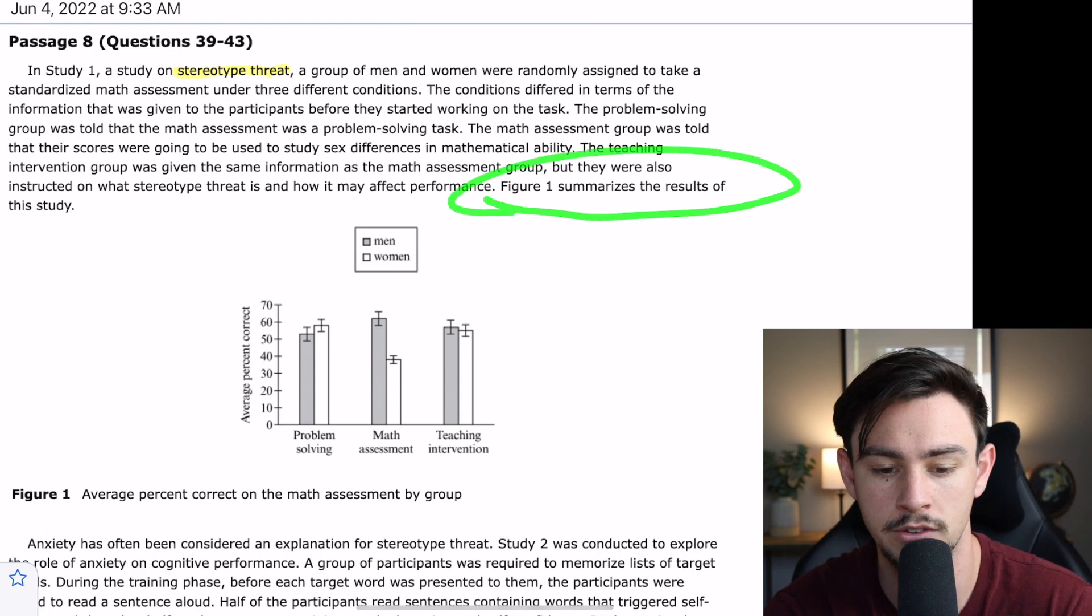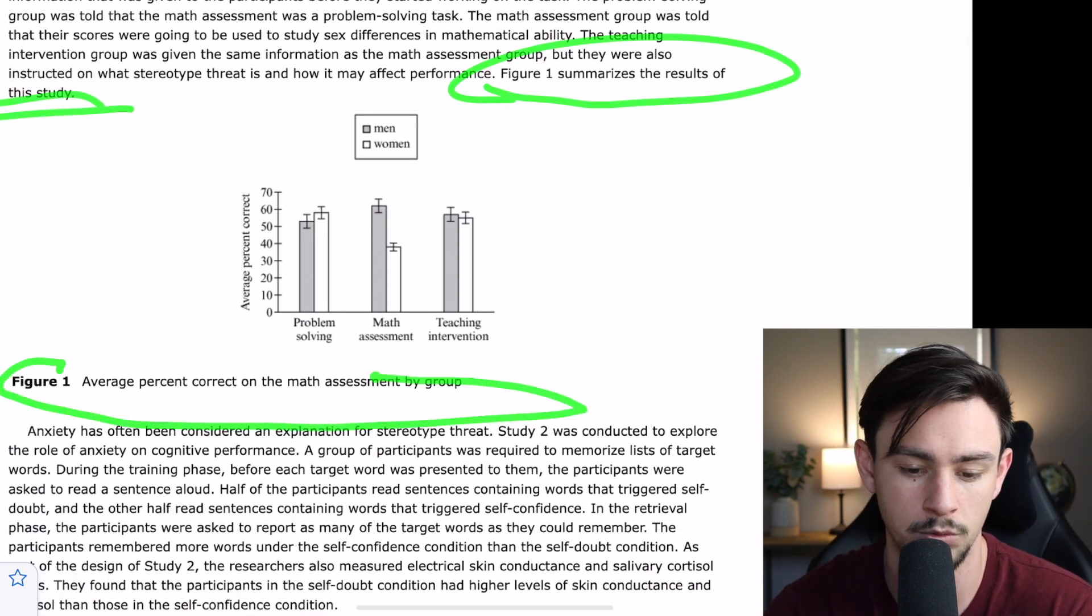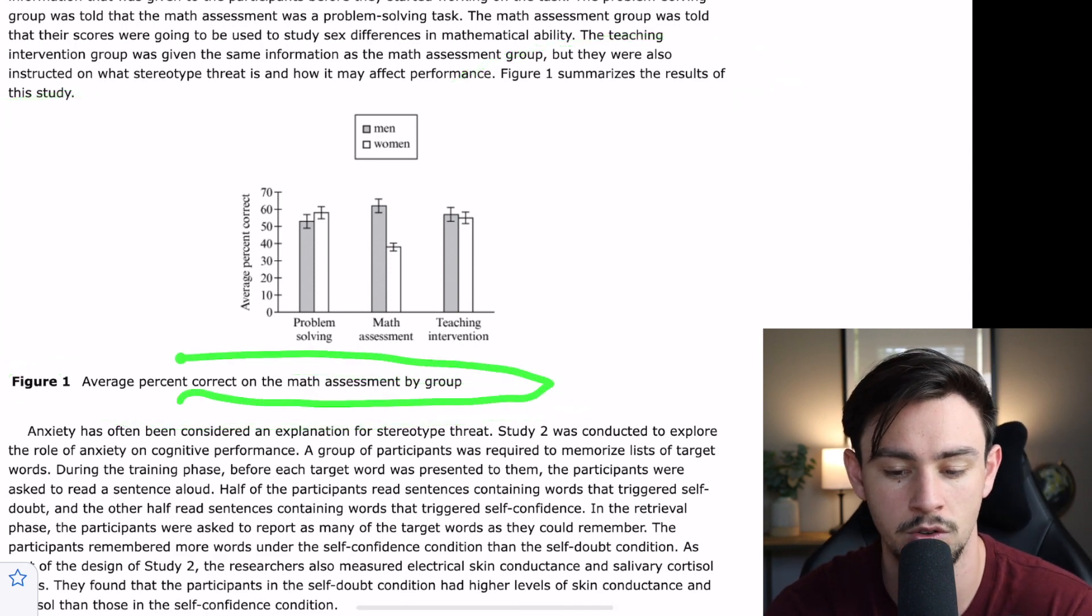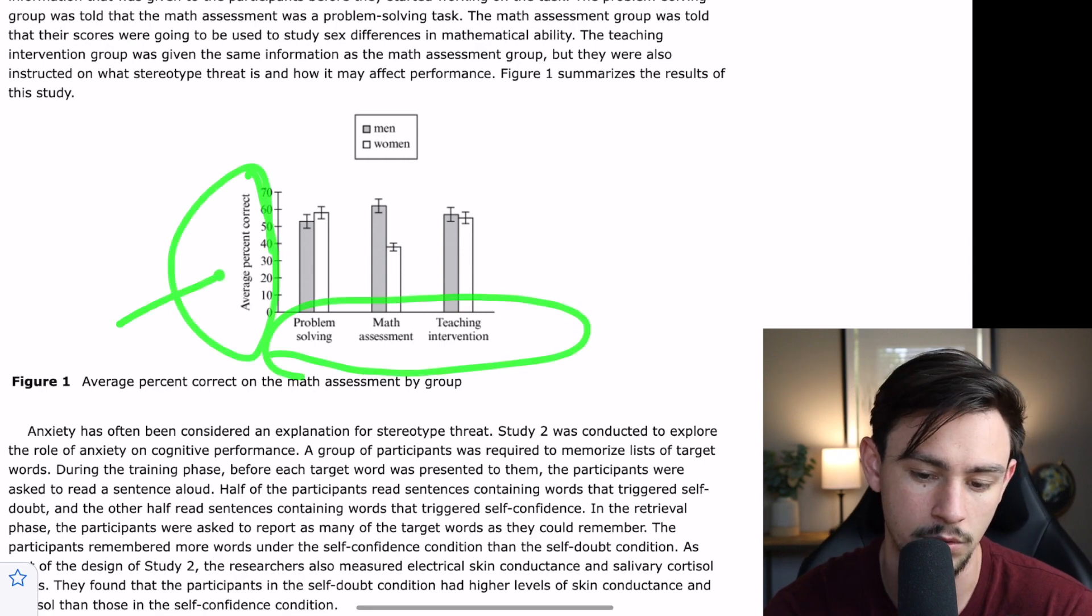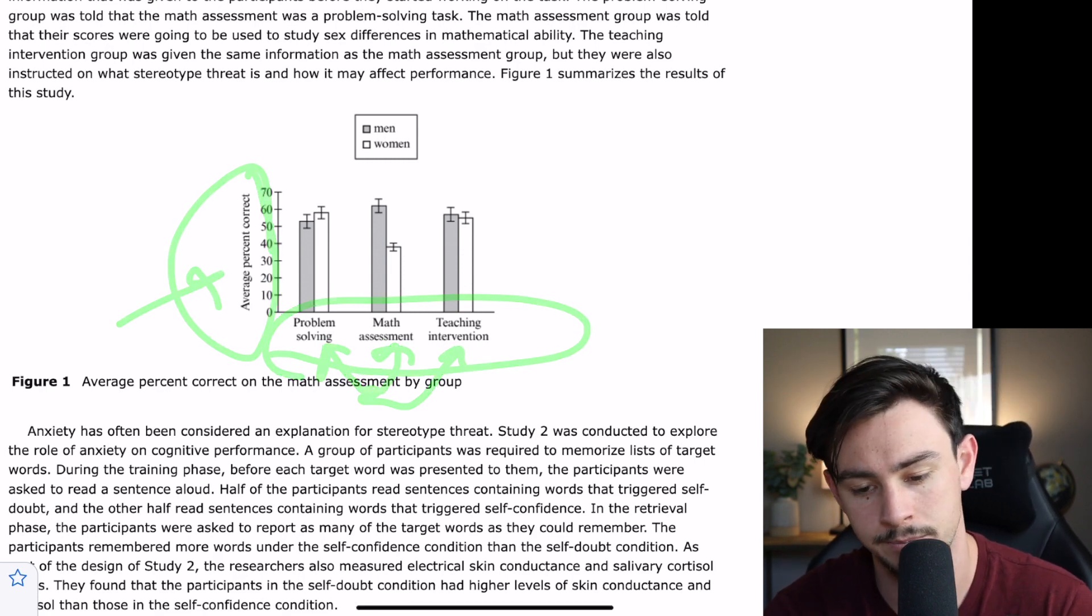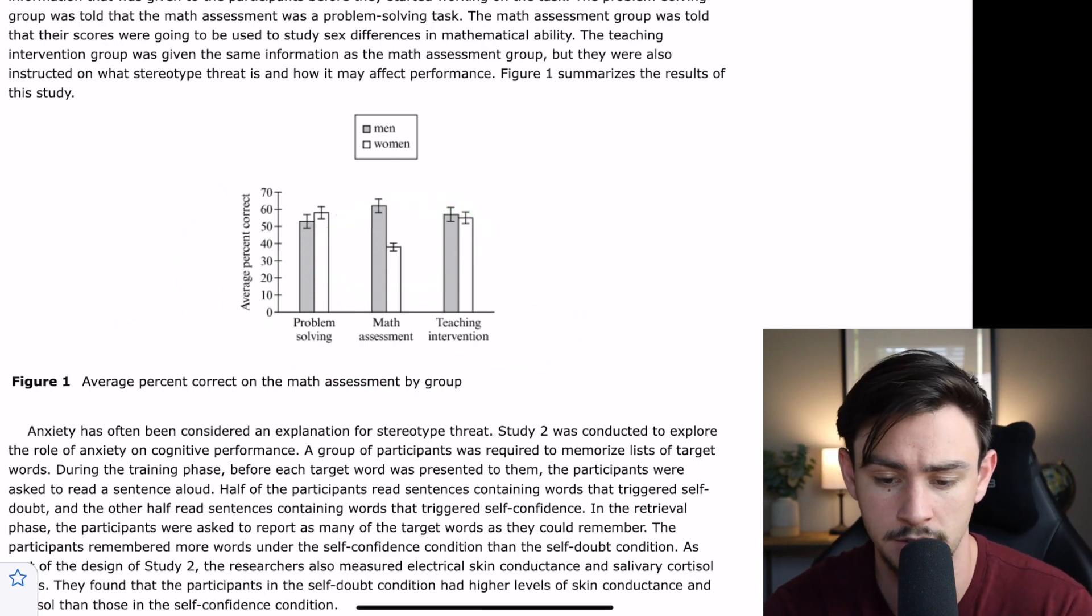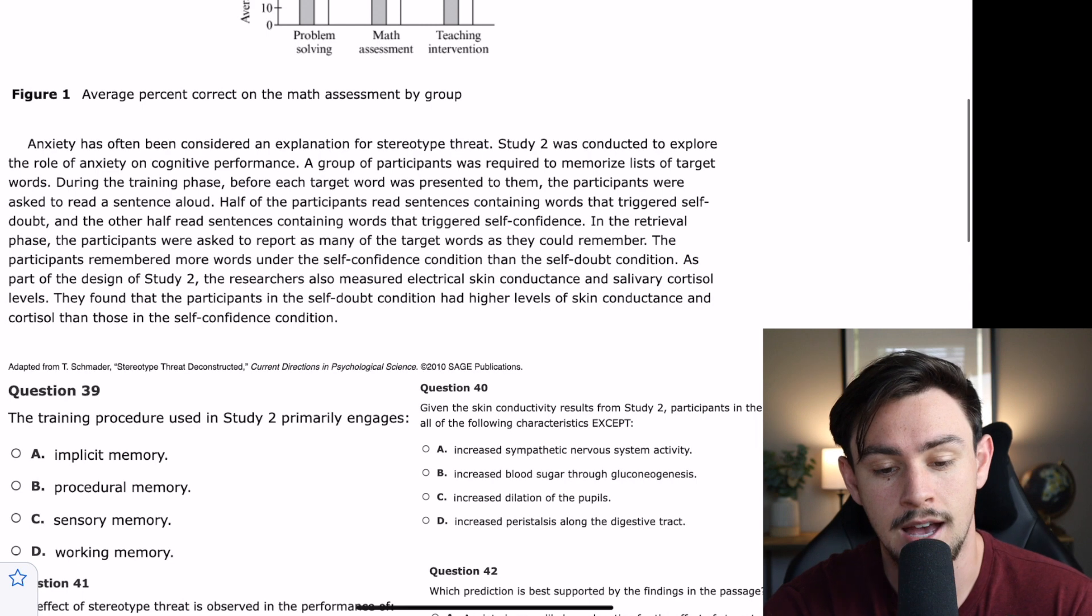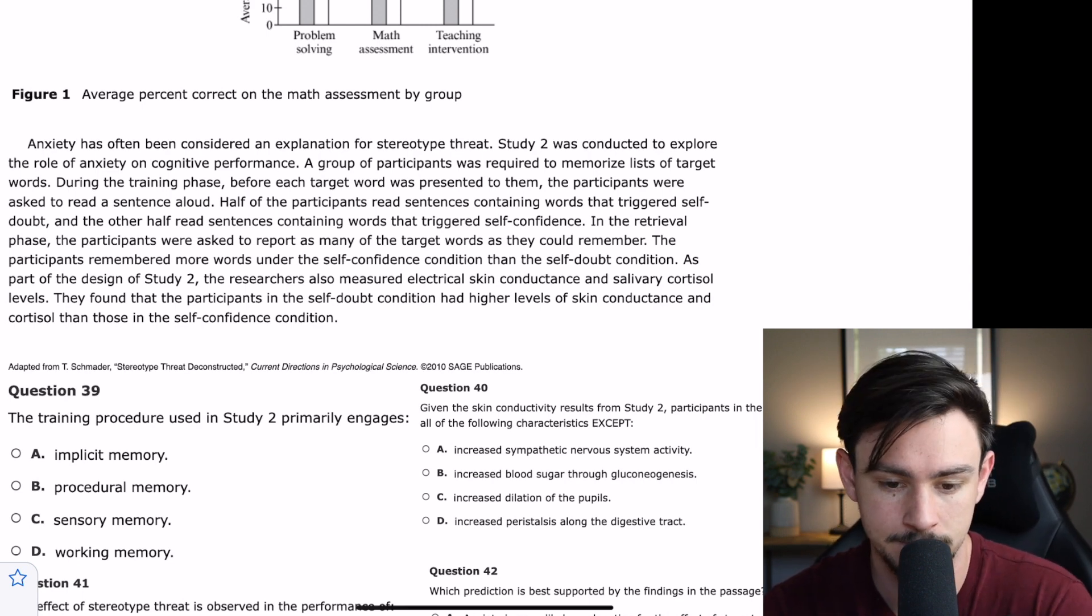This intervention group right here is telling me that what they're really looking for is for people to dip in their performance whenever they're told that a certain sex is poor at math. And then whenever we instruct them what stereotype threat is, they're probably hoping that you kind of overcome that. So, that would be kind of a cool finding. This says, Figure 1 summarizes the results of this study. So, remember, for interpreting figures, we just read this, which is the average percent correct on the math assessment by group. And then we look at the axes. So, average percent correct. And then the different groups. Okay. Good deal. Not worrying about interpreting this. Even though it's really quick, I'm not worried about interpreting it right now. Going on, it says, Anxiety has often been considered an explanation for stereotype threat. Okay.